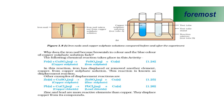We have other examples of displacement reaction. For example, the reaction of zinc with copper sulfate. In this reaction, zinc metal is more reactive than copper. So, it will replace the position of copper and form zinc sulfate and copper.